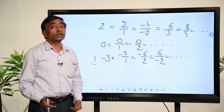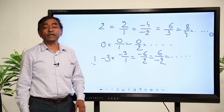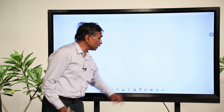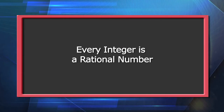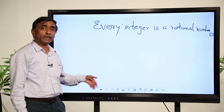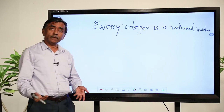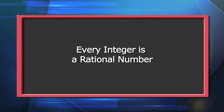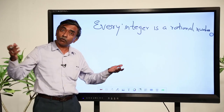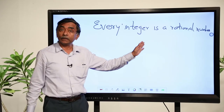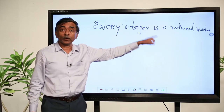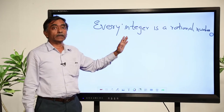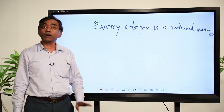Our conclusion: every integer is a rational number. Can you tell me whether every natural number will be a rational number? Yes, because every natural number is an integer — take 1, it is a positive integer; take 2, it is a positive integer. Whole numbers are also integers because 0 is an integer, and whole numbers start from 0, 1, 2, 3, 4, 5, 6 and so on. So all of them are integers and therefore rational numbers as well. Every integer is a rational number means that whatever numbers you have studied till now, they were all rational numbers.